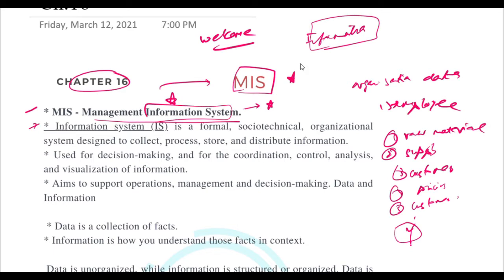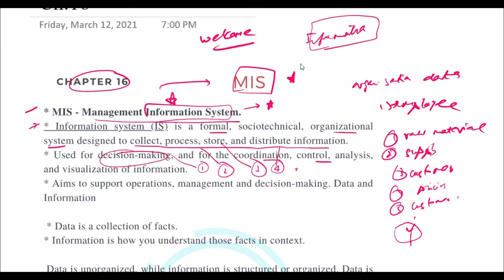An information system is a formal organizational system designed to collect, process, store, and distribute information. You collect the information you need, then process it, then store it, so that it is useful for you. The information system is mainly useful for decision making, coordination, control, analysis, and visualization of information.